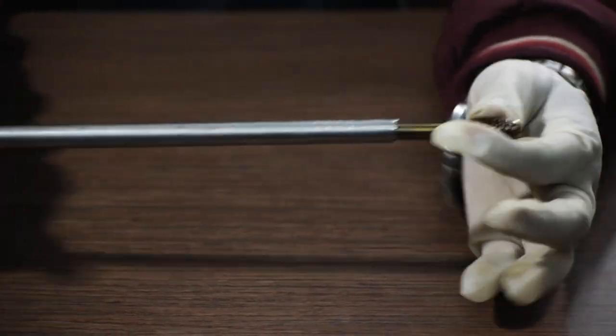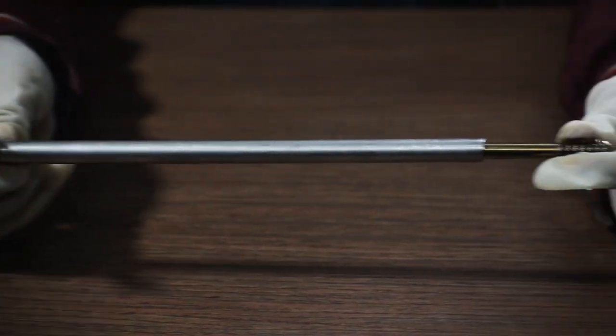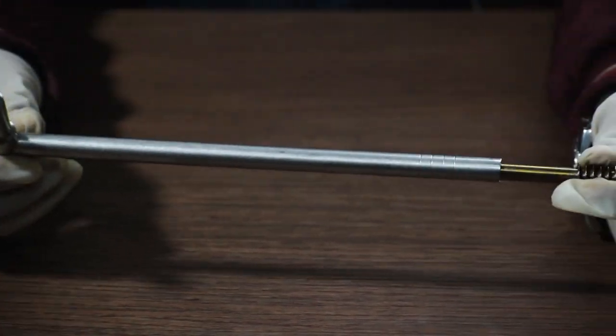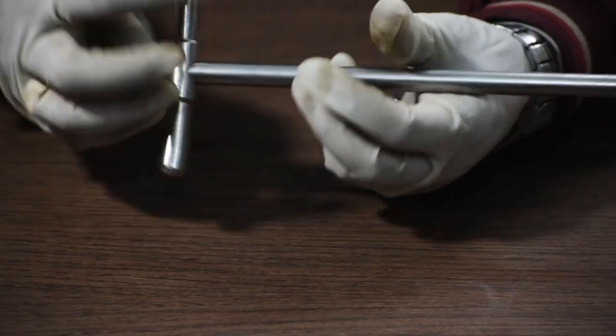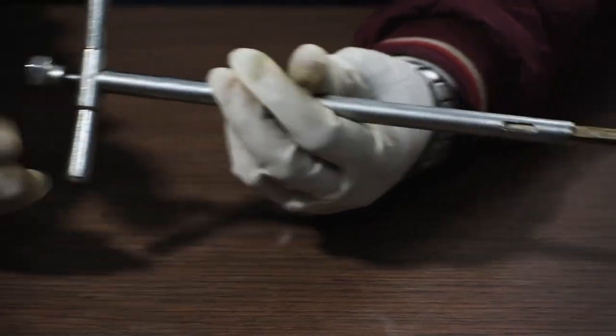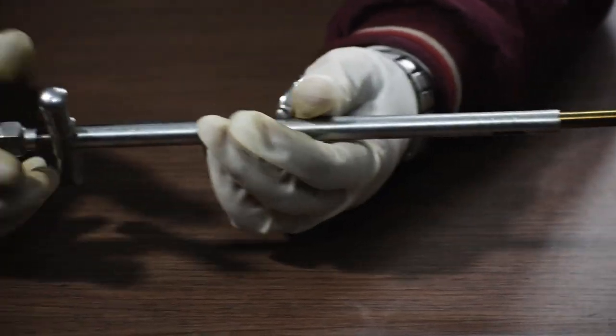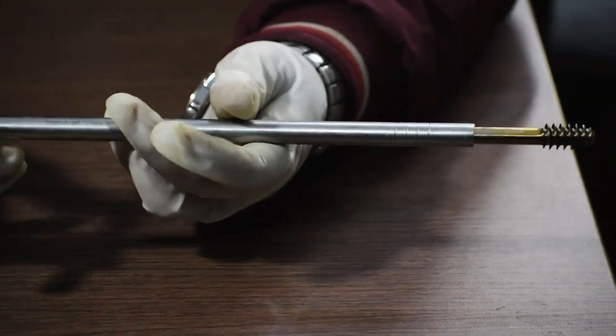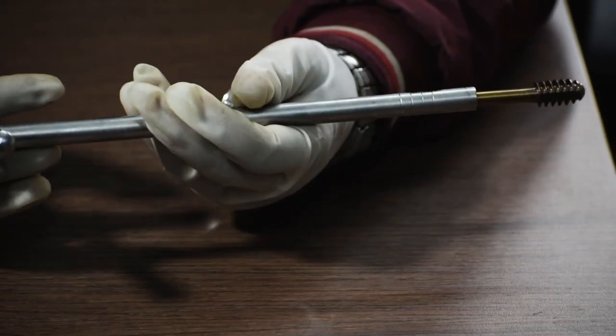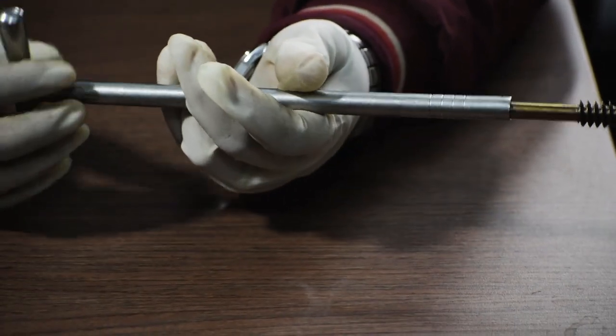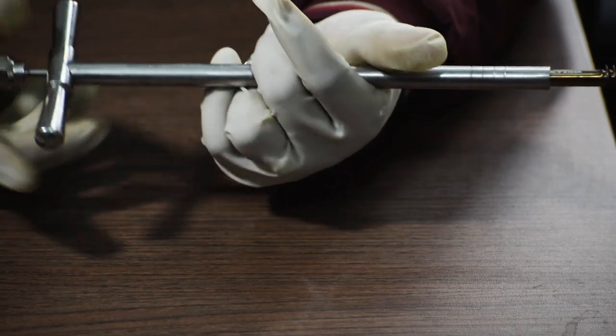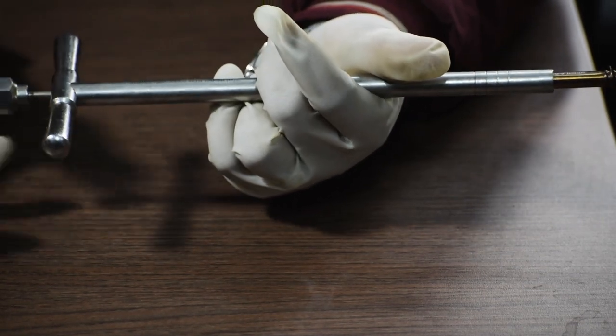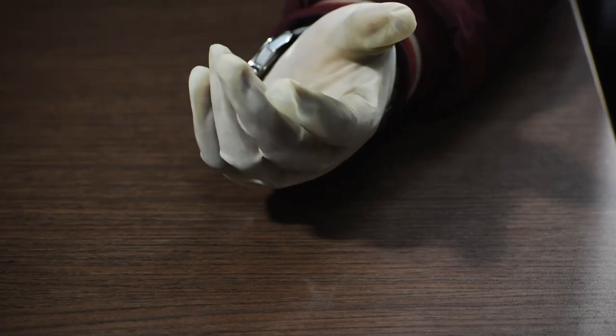This basically constricts the movement of the lag screw. Now, after that we start rotating anti-clockwise to take out the lag screw. Once the screw is removed, then further measures are taken to remove the DHS screw which we will cover in a later video.